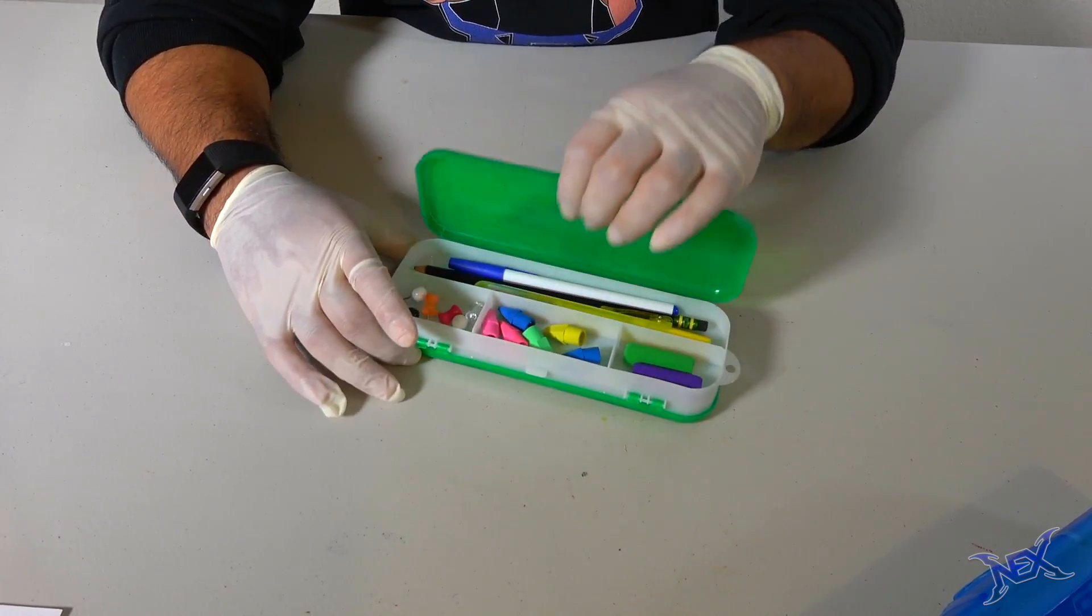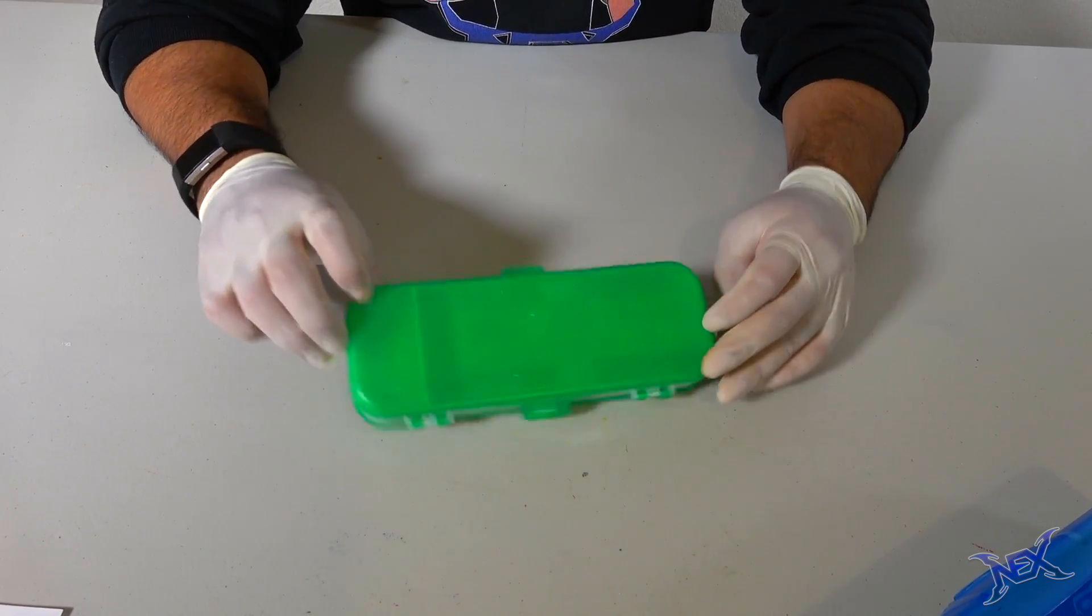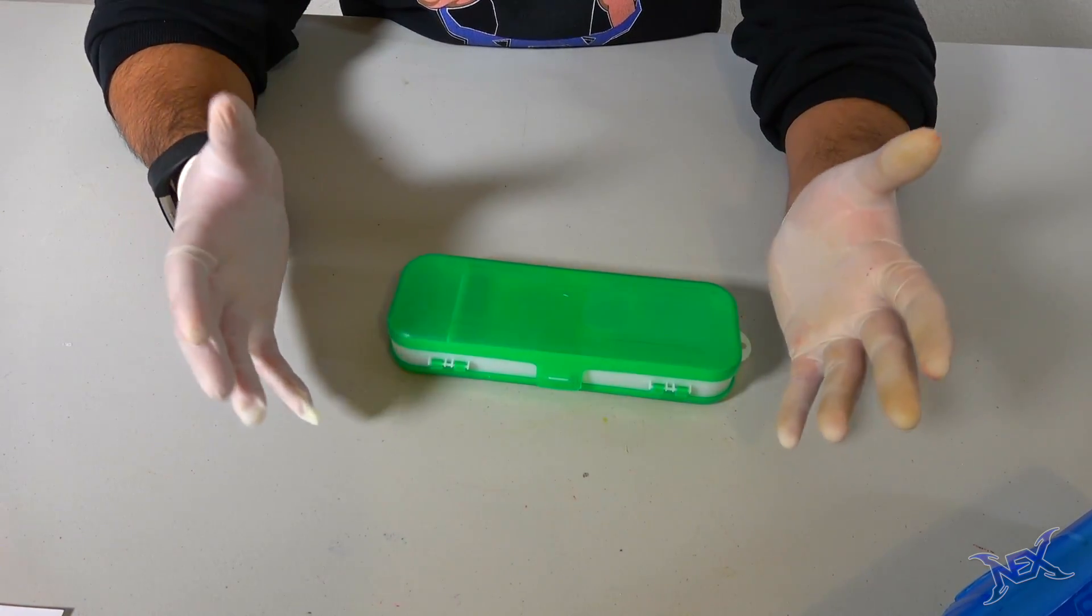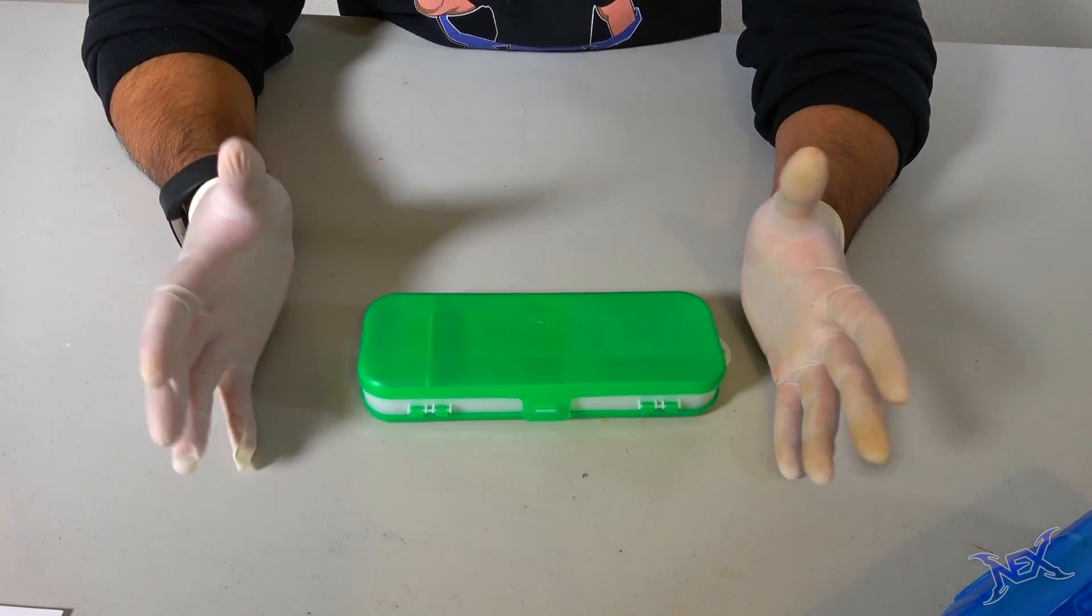on one side you can have your school supplies and on the other side you can have actual food. And I've shown you ways on how to make secret compartments on the bottom of school supplies, but this one